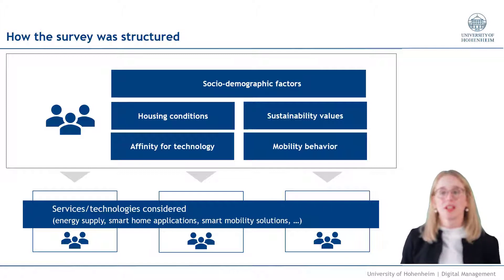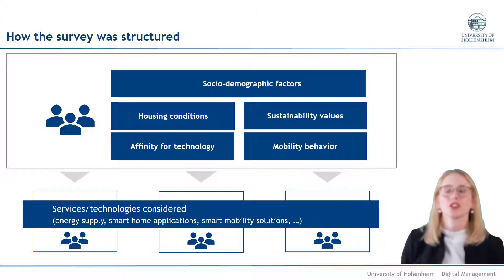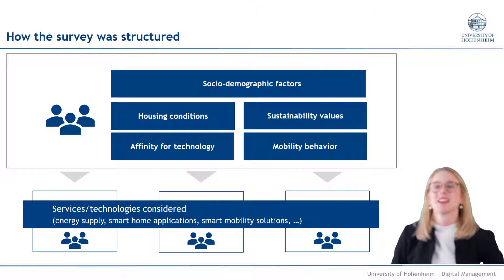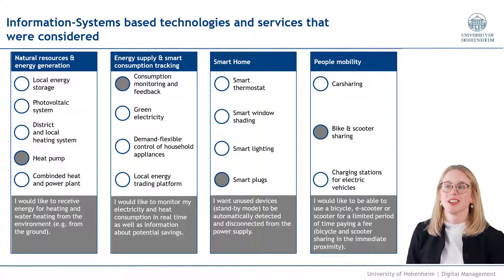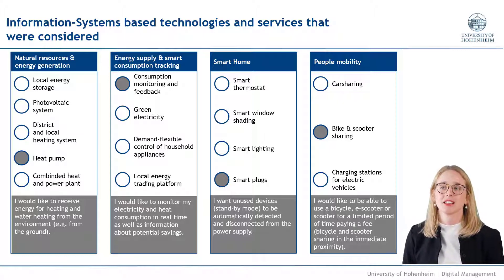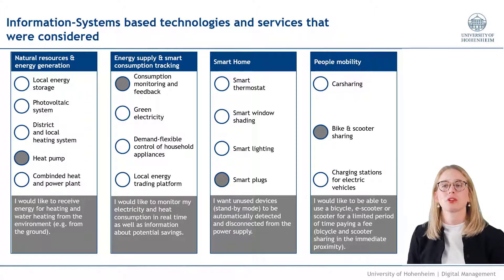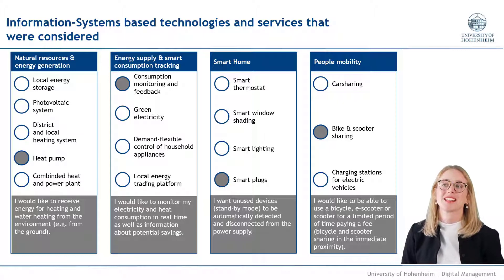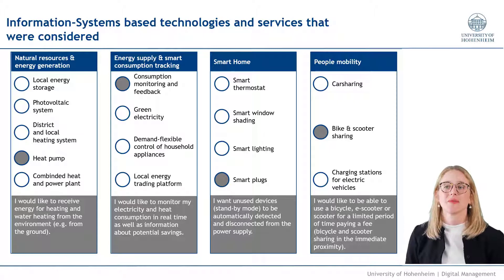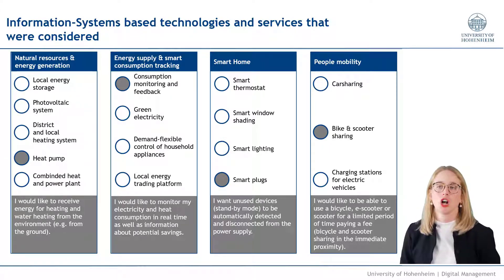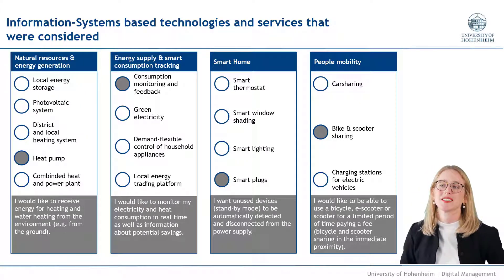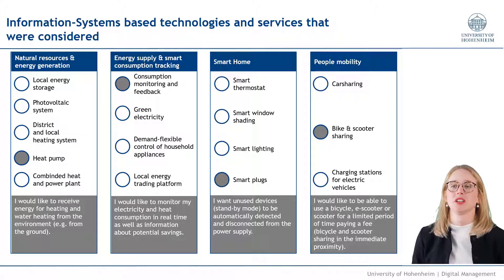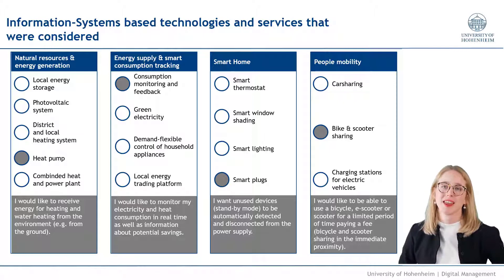On top of this, we surveyed our respondents about their preferences on technologies and services for a smart district in which they would like to live. To identify citizens' preferences regarding different technologies and services, we first developed a comprehensive framework with domains and subdomains reflecting the technical architecture of smart districts. This framework in total comprised 16 technologies and services and served as guidance for categorizing them. We described each technology and service intensely at the start of the survey and provided a short description during the survey. We asked respondents to select technologies and services that meet their preferences, using a so-called best-or-worst scaling approach to analyze the collected data.